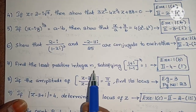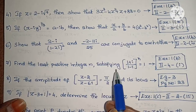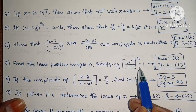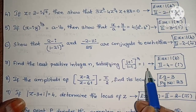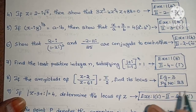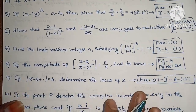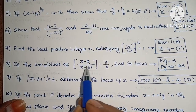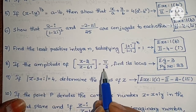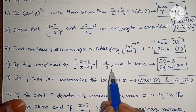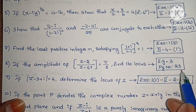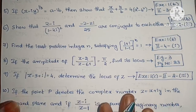Next, find the least positive integer n satisfying ((1 + i) / (1 - i))^n equals 1. Exercise 1 below, second roman, fourth, first one. Next, if the amplitude of (z - 2) / (z - 6i) equals pi by 2, find its locus. Example 3, page number 23.